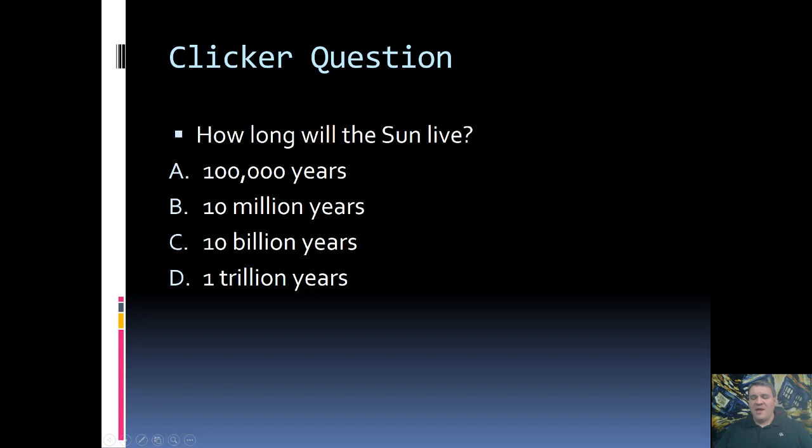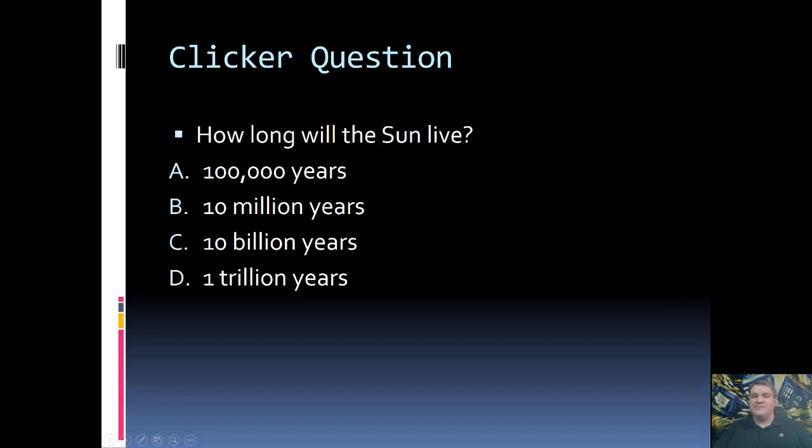Okay, so the sun is going to remain on the main sequence for about 10 billion years. So, if stars live for millions, billions, and then we saw in the case of really low mass stars, even trillions of years, then how is it that we humans, who have a maximum lifespan of somewhere around 100 years, can figure out how they form, age, and die?